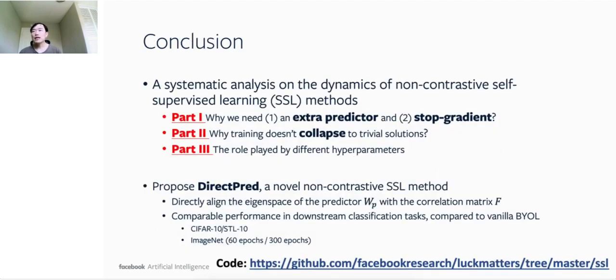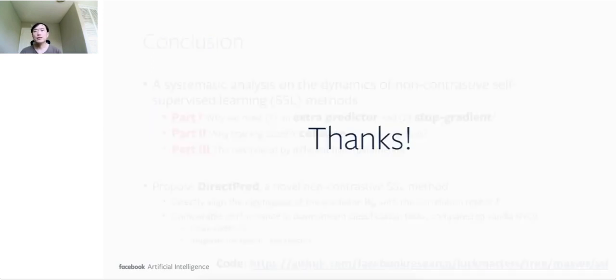In summary, we proposed a systematic analysis on the dynamics of non-contrastive self-supervised learning methods using a minimum setting of linear weights and linear predictors. We give the underlying reason why we need an extra predictor and stop gradient, why training does not collapse to trivial solutions, and the roles played by different hyperparameters. Based on our analysis, we finally proposed DirectPredict, a novel non-contrastive SSL method. In each mini-batch, DirectPredict directly aligns the eigenspace of the predictor W_P with the correlation matrix F of the predictor's input. DirectPredict shows comparable performance than linear BYOL in CIFAR-10, STL-10, and ImageNet. Our code is already open source, and we welcome everyone to use. Thanks for your attention.